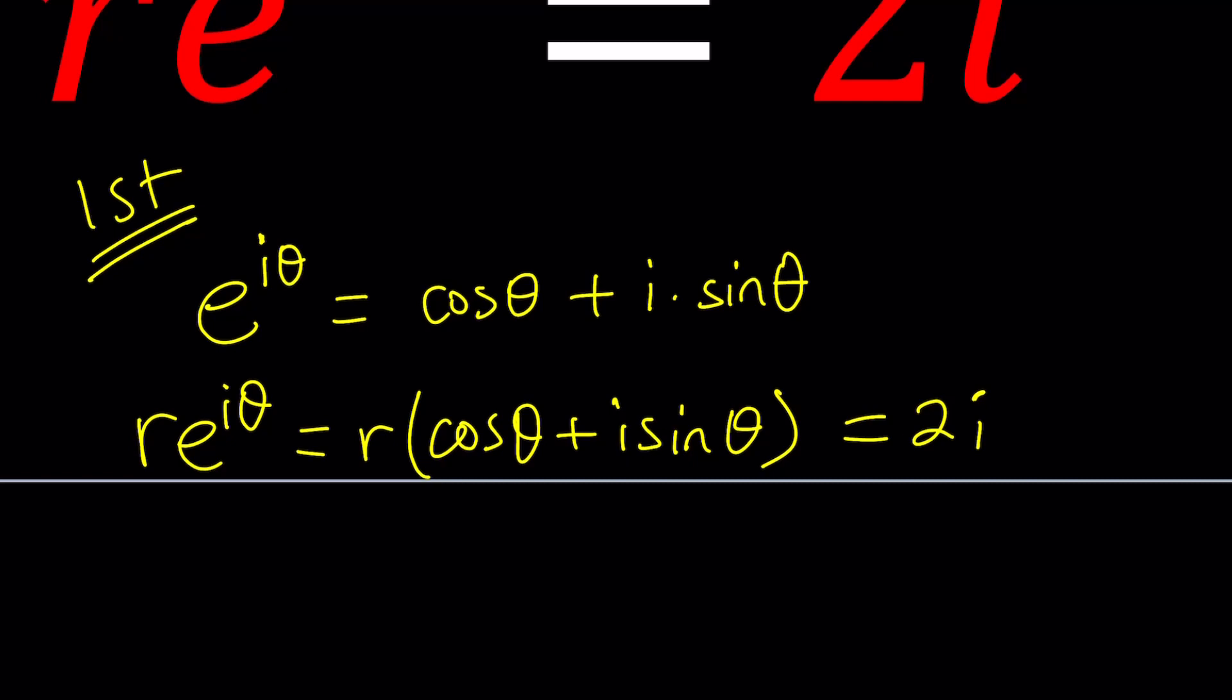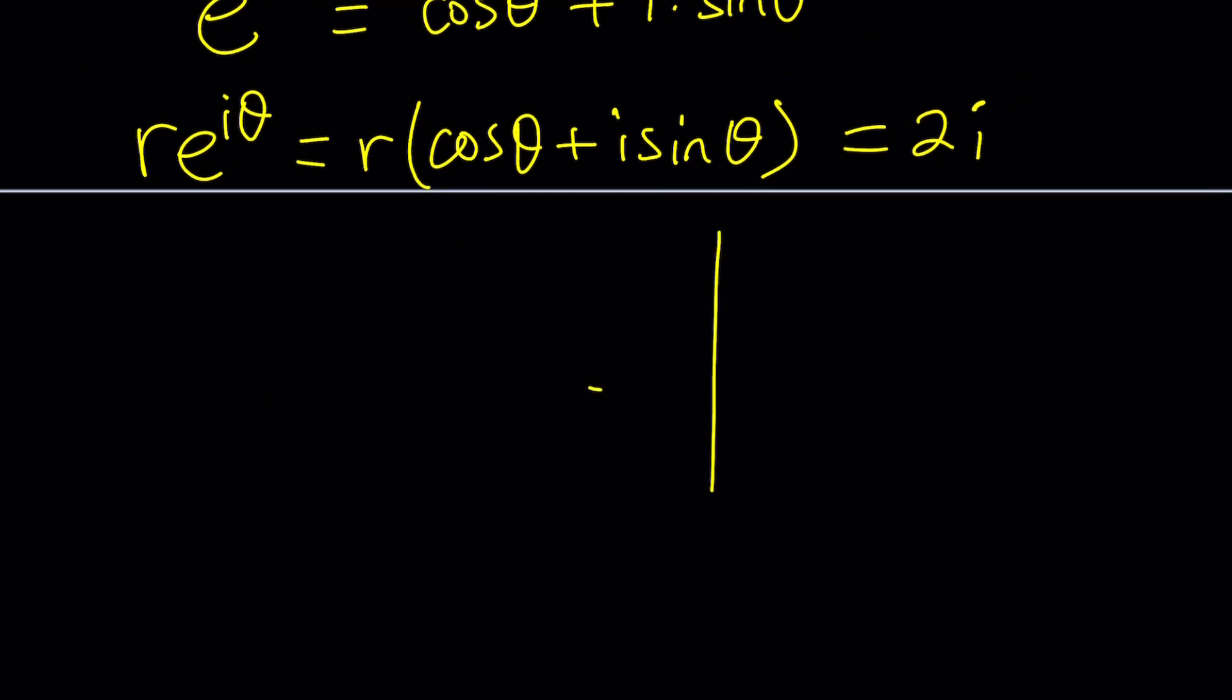But the question is, how do we express 2i in polar form? So let's go ahead and do it. And then we're going to be comparing the two polar forms. So how do we write 2i in polar form? Think about 2i. It's basically 0 plus 2i, or it's the same thing as the point 0,2. So it's just going to appear here. And its distance from 0 is basically going to be 2 units.